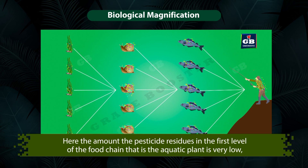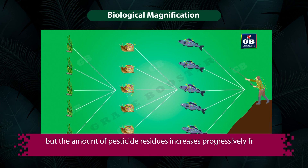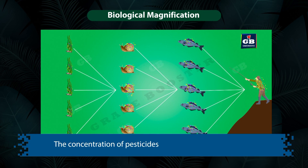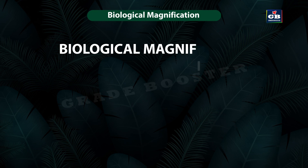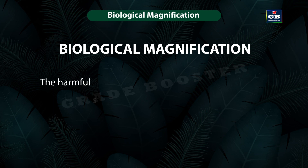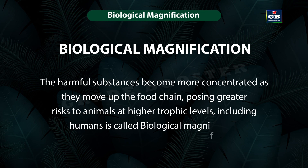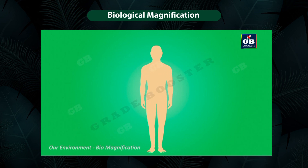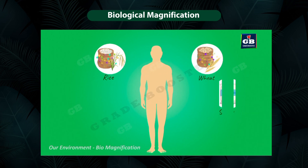The amount of pesticide residue in the first level of the food chain — that is, in the aquatic plant — is very low. But the amount of pesticide residues increases progressively from one trophic level to the next trophic level, and the concentration of pesticides is magnified at the final level. This phenomenon is called biological magnification. When harmful substances become more concentrated as they move up in the food chains, posing greater risk to animals at higher trophic levels including humans, this is called biological magnification.